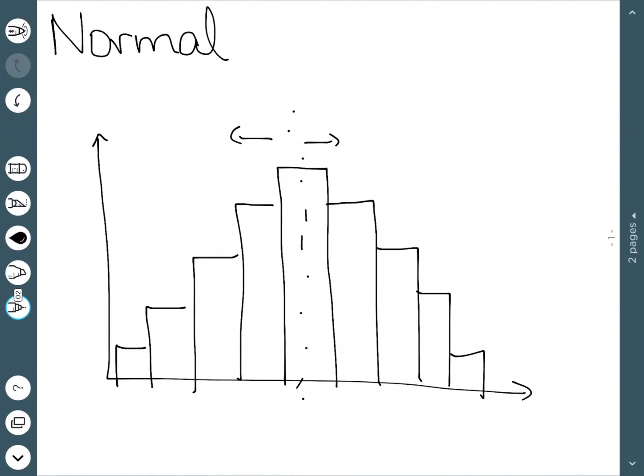Normal distributions are very important in statistics and will be discussed a little bit more later. One of the main things to note is that our mean, median, and mode are all the same for a normal distribution, and they're all that center point.